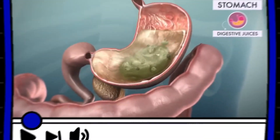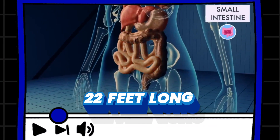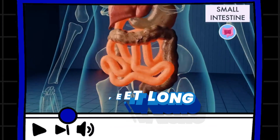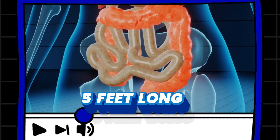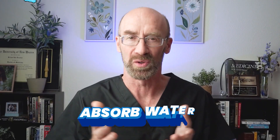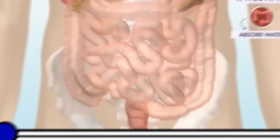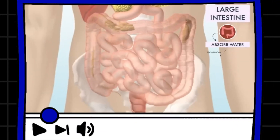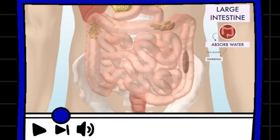The stomach empties into a long tube called the small intestine, which is about 22 feet long. And then the small intestine goes into a shorter, fatter tube called the colon — it's about five feet long. The colon's main job is to absorb water and a few nutrients and electrolytes, but really to turn the liquid material that comes out of the small bowel into stool.